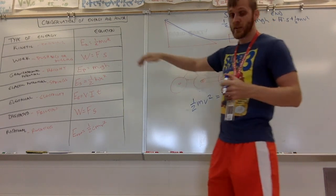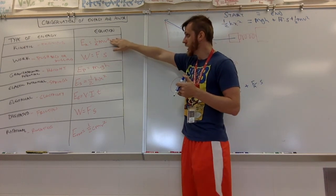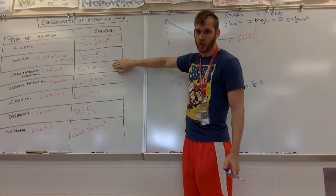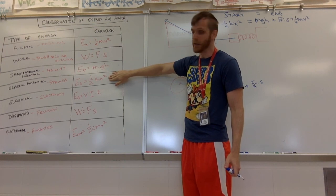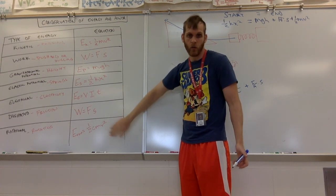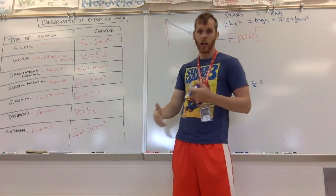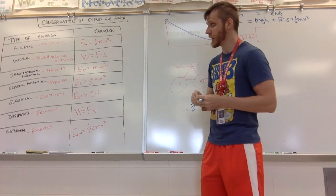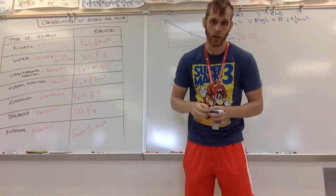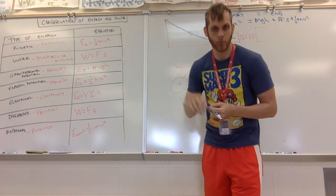You can also do these same conservation equations with power. Power is just energy divided by time, so you can divide each energy equation by T: one half m v squared divided by T, or F times displacement divided by T, or m g h divided by T, or one half k x squared divided by T. For electrical energy, this gives power equals I times V. You can set mechanical power equal to electrical power the same way. We'll focus on energy since it's called conservation of energy, but conservation of power works the same way.